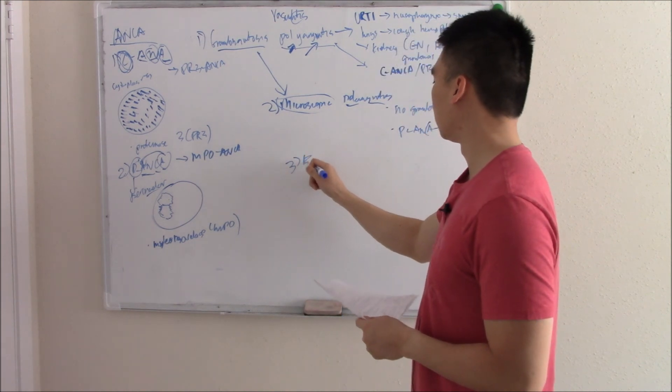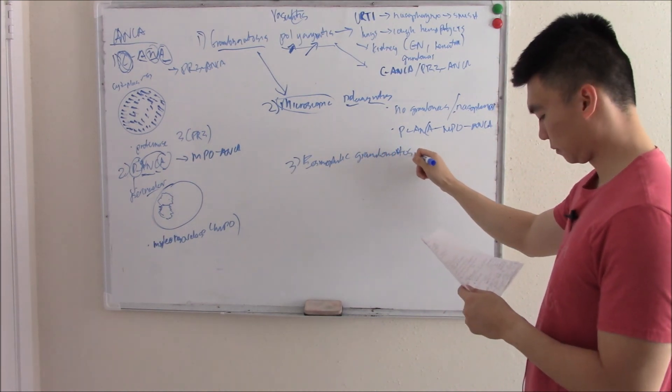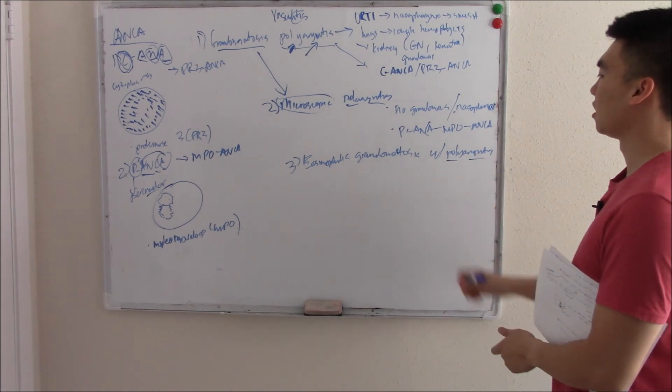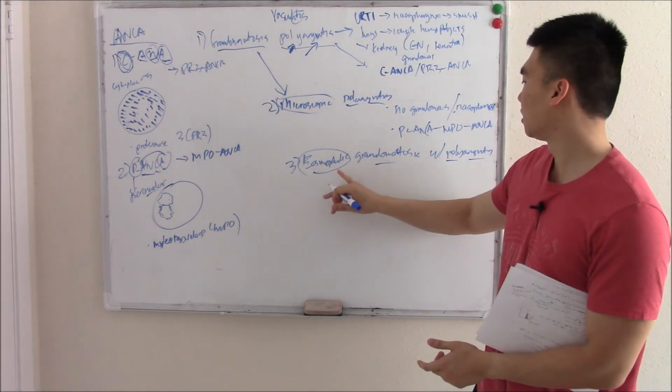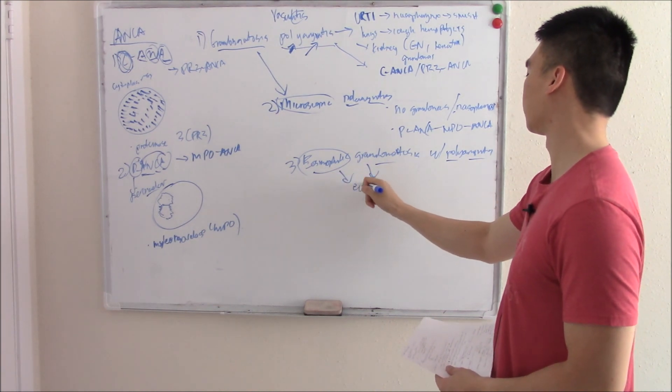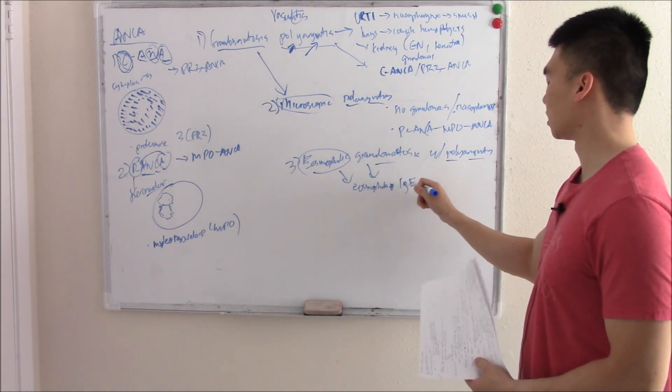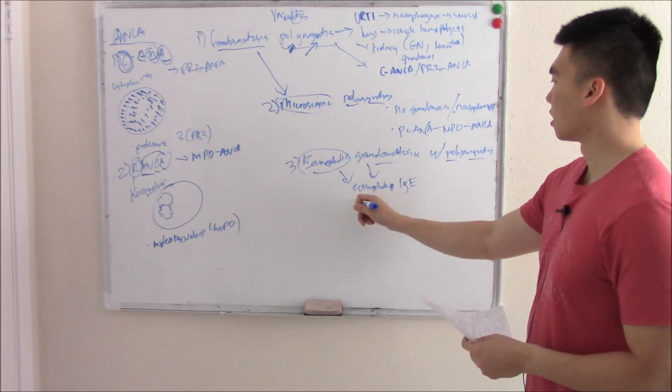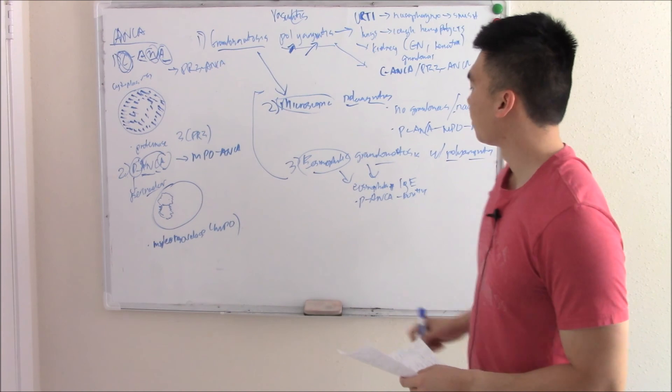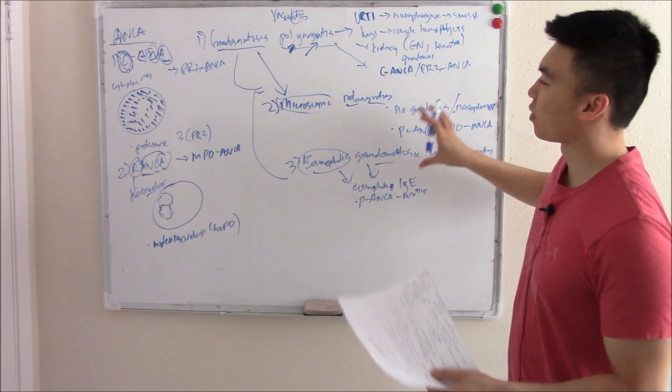Third one on the list is eosinophilic granulomatosis with polyangiitis. What does this mean? Inflammation of multiple vessels with granulomas and eosinophils. What do you think you're going to see? You're going to see granulomas, you're going to see eosinophils. On blood, you're going to see eosinophilia and increased IgE, because those two kind of go together. And this is also p-ANCA positive. So the last two are p-ANCA positive, the first one is c-ANCA positive. And I think that's all the ones that are ANCA-anything. If you know these three, I think you're in good shape.